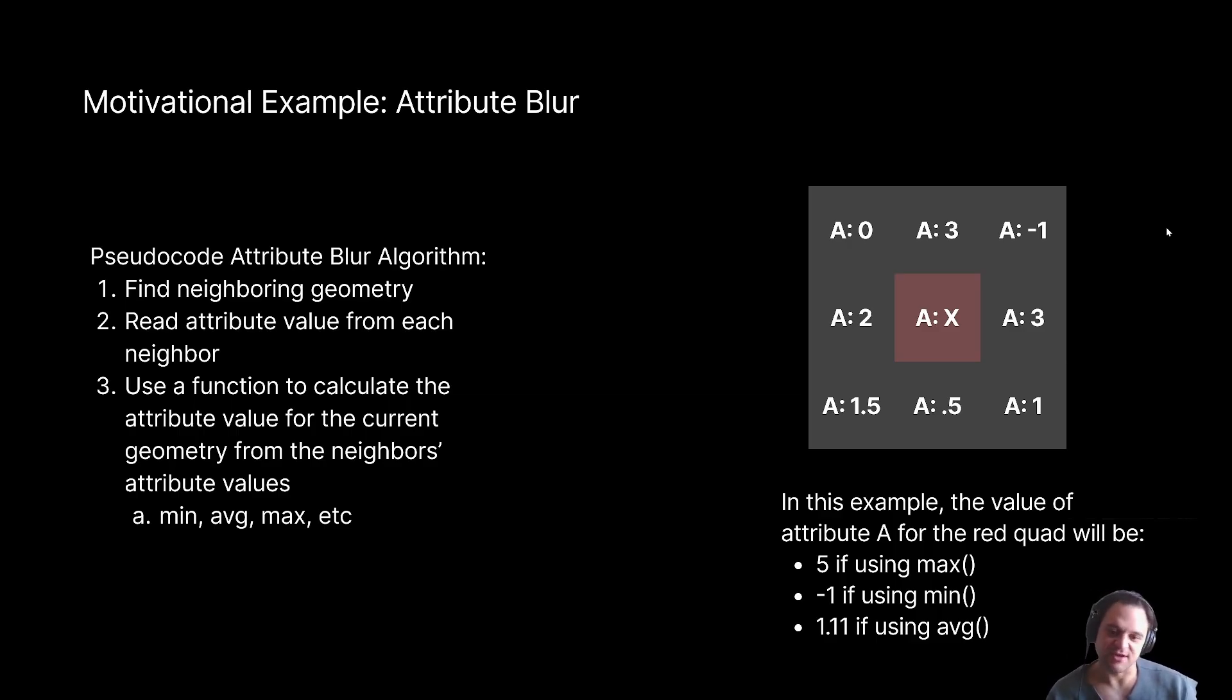So, as you can see on the right, as a very simple example, let's pretend we had a grid, and our grid had points or quads that each had attributes. In this case, I just assigned some arbitrary values, and the point is, if we're calculating using attribute blur, the attribute value for the red quad, that value would be 5 if we were using the max operation, it would be negative 1 if we were using the min operation, and it would be 1.1 if we were using the average. So, all of those are obviously quite different, and your specific use case will dictate the algorithm that you choose to use.